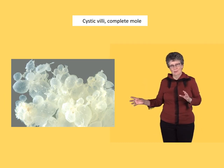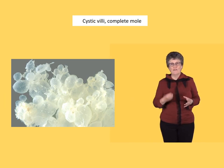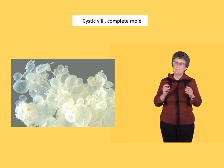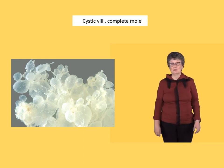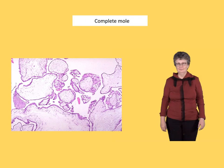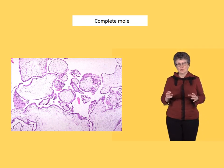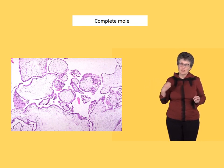This is what a complete mole looks like. Those little bubbly things are villi. People often describe them as being like a bunch of grapes, and they're about the same size as a bunch of grapes too. Down the microscope, we can see that these villi are big and they've got that lacy network around the outside of them — that's the proliferating trophoblast.